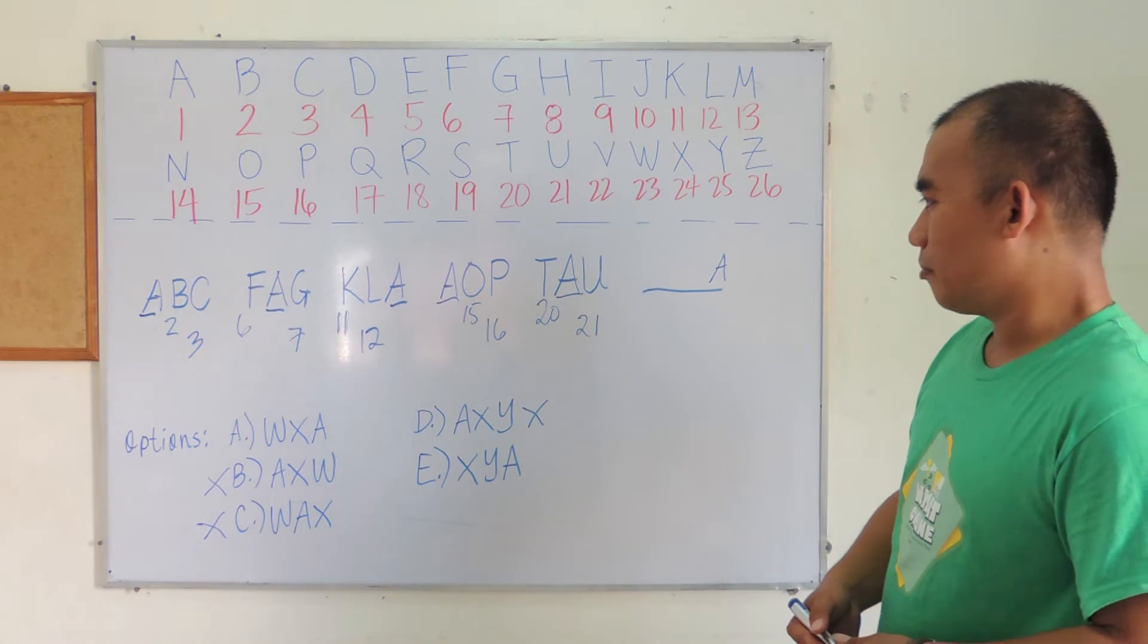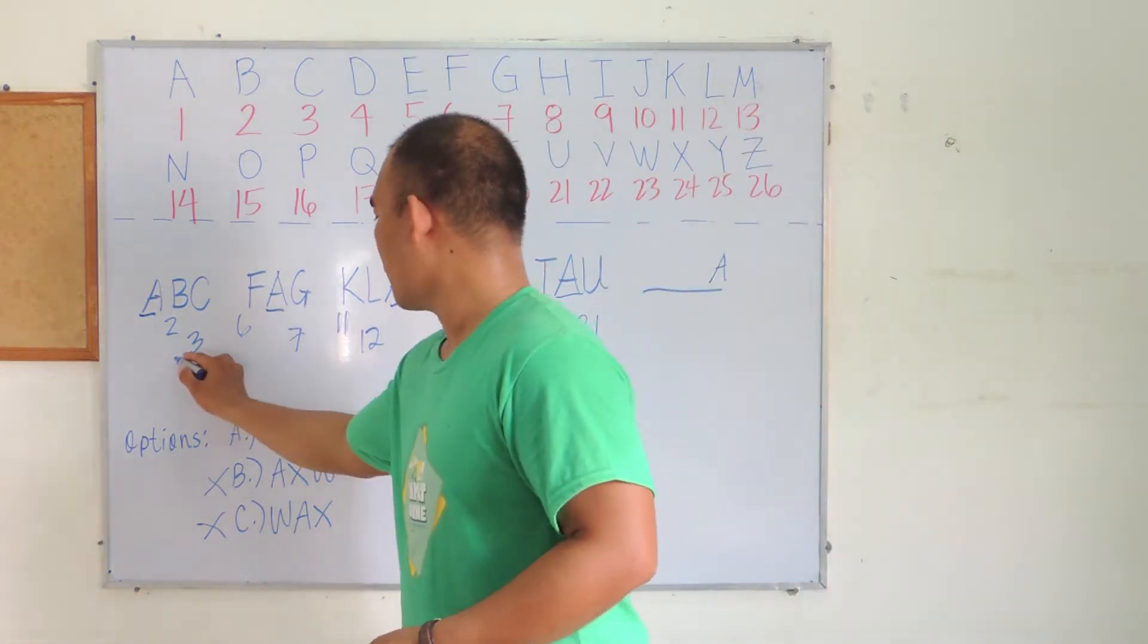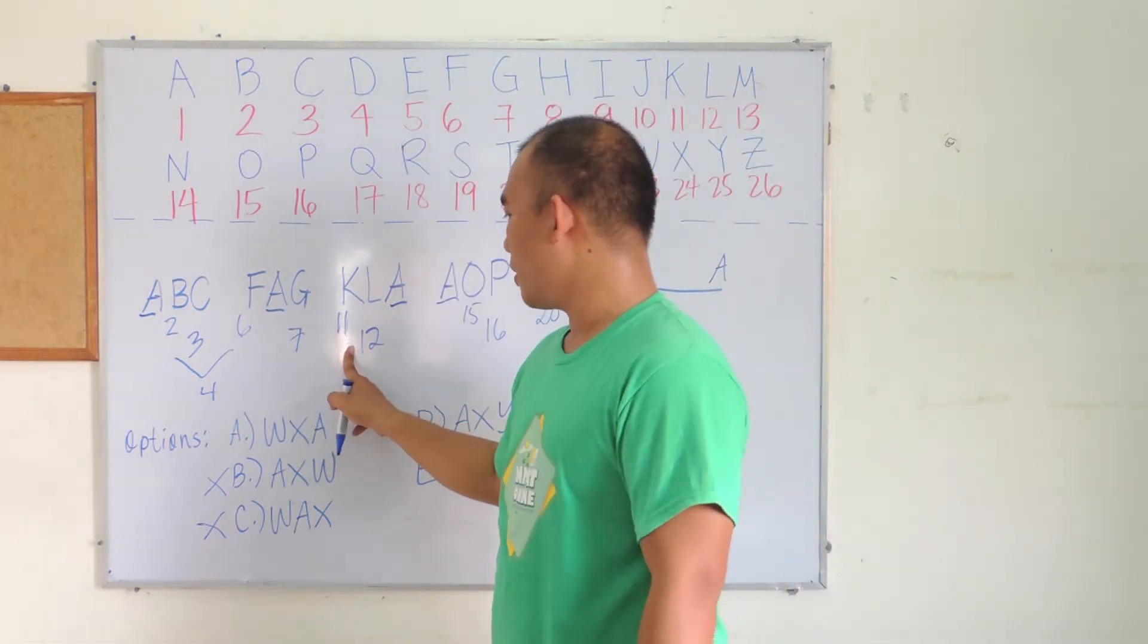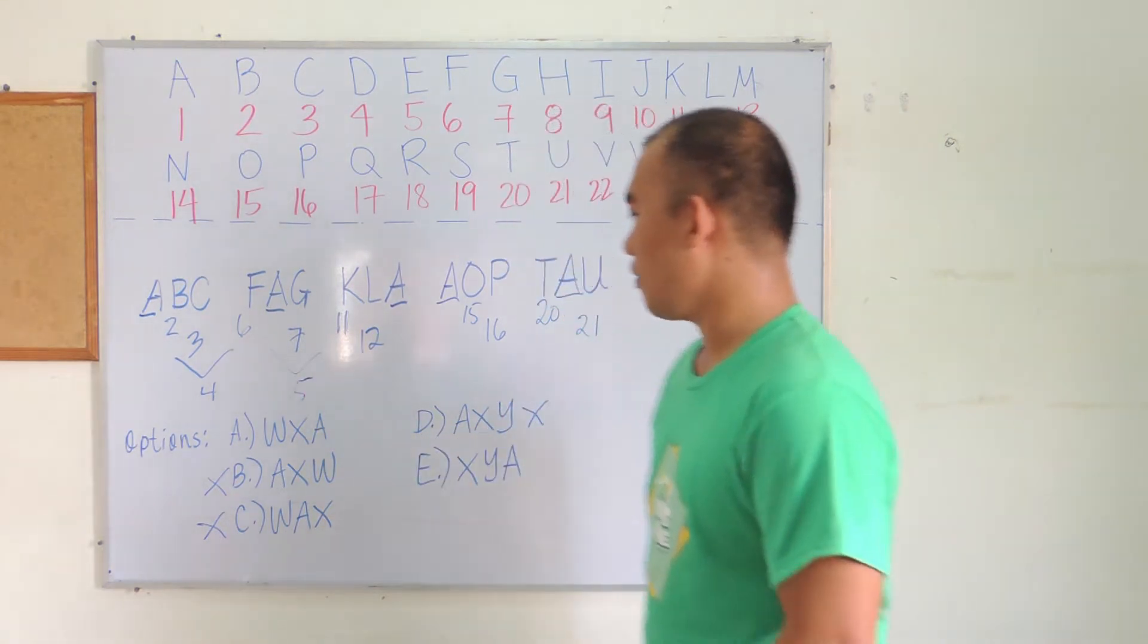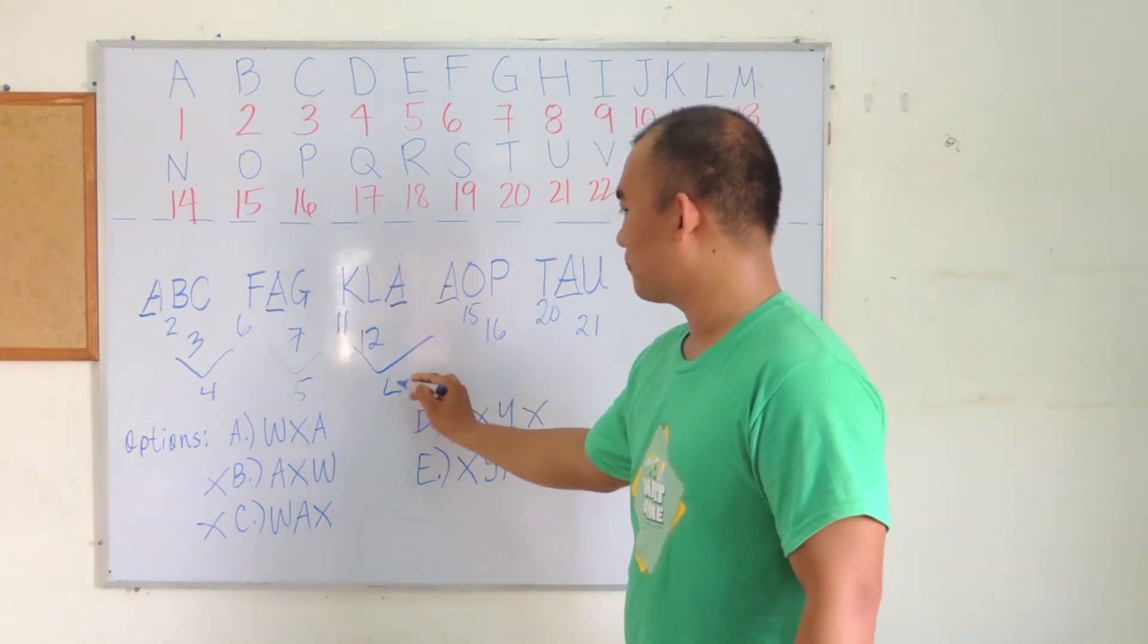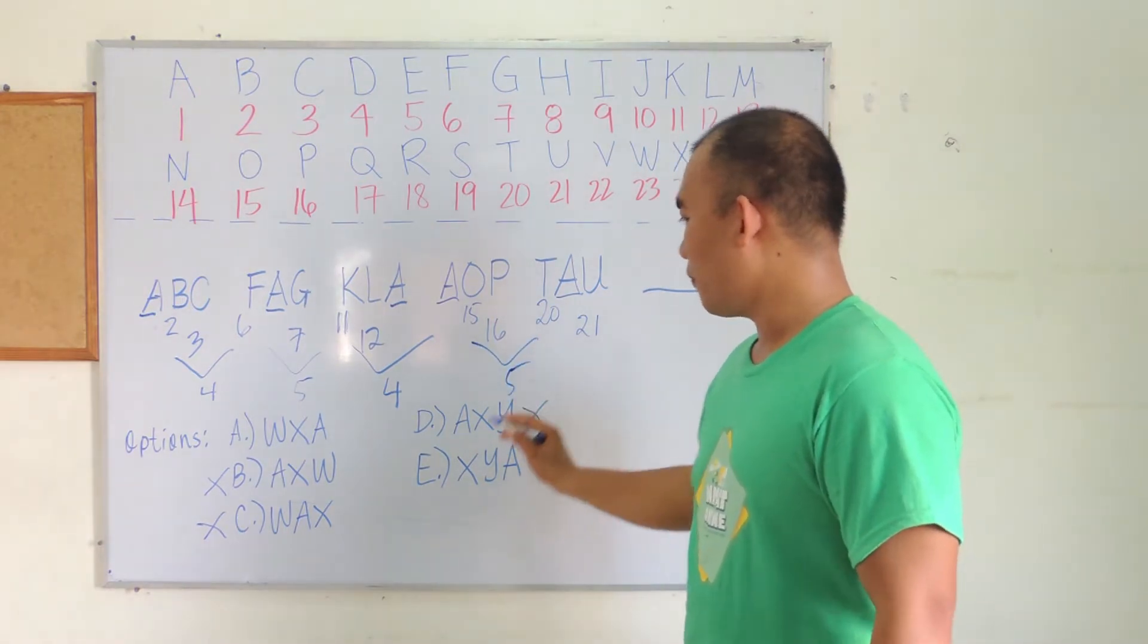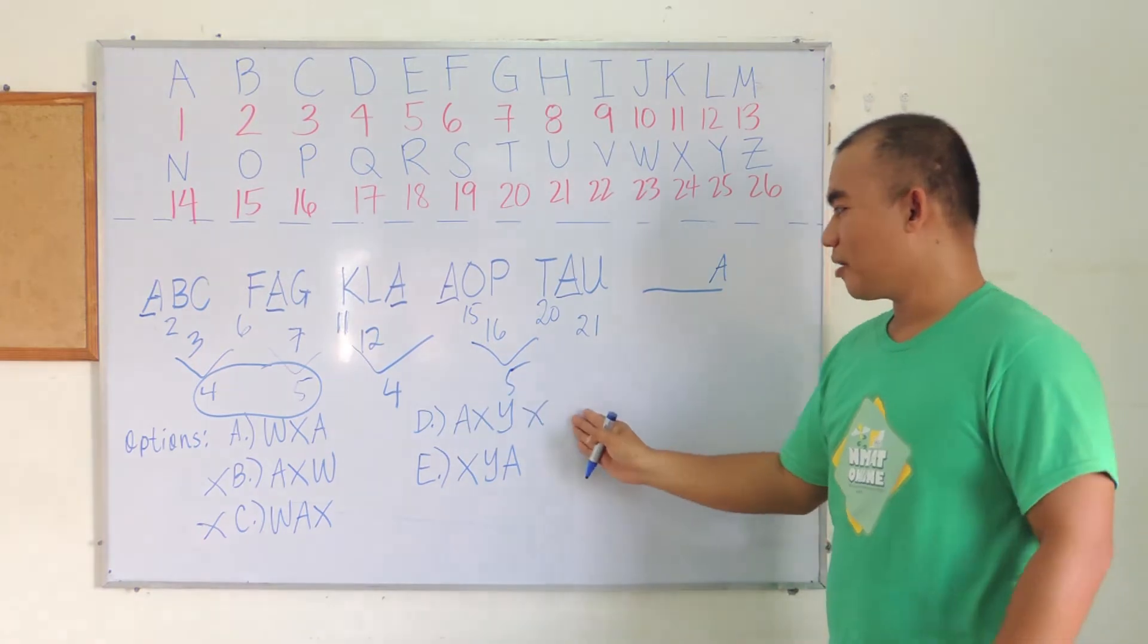We have from 2 to 6 is plus 4. From 6 to 11, focus on the first number, that's plus 5. Then 11 to 15, back to plus 4. From 15 to 20, that's plus 5. So therefore, we have a cycle: plus 4, plus 5, plus 4, plus 5.